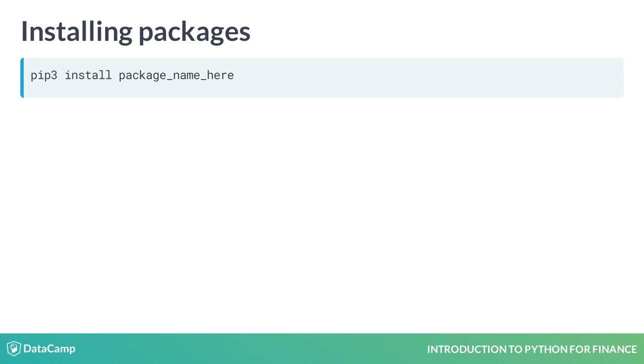Before you can use a package, you need to download it. You can use the command pip3 install package_name to install the relevant package. So, in order to install the numpy package, which we will be using next, you use pip3 install numpy.